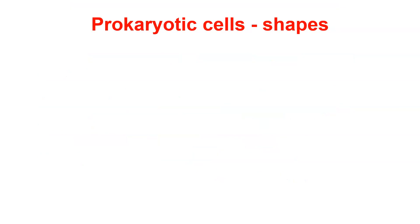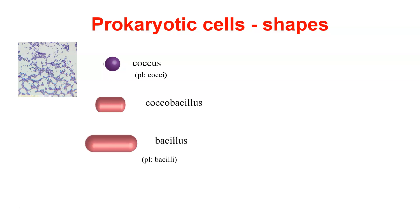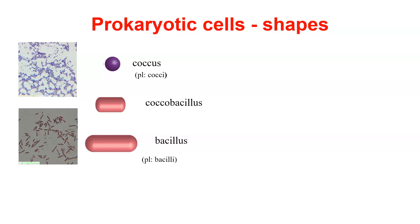Now let's look at some prokaryotic shapes. There are a few basic shapes that we always see, which include the coccus — the plural is cocci — a round shape that is basically one-to-one, looking like tiny little spheres next to each other. We have the coccobacillus, which is about twice as long as it is wide. We have the bacillus — the plural is bacilli — which is about three times or more longer than it is wide, and bacilli often look like little tubular shapes.